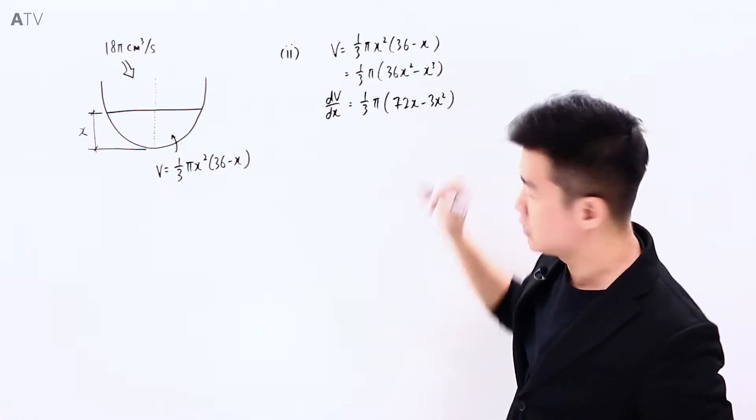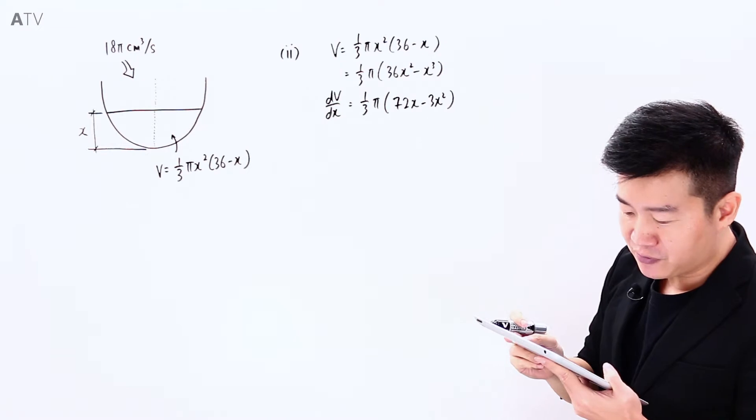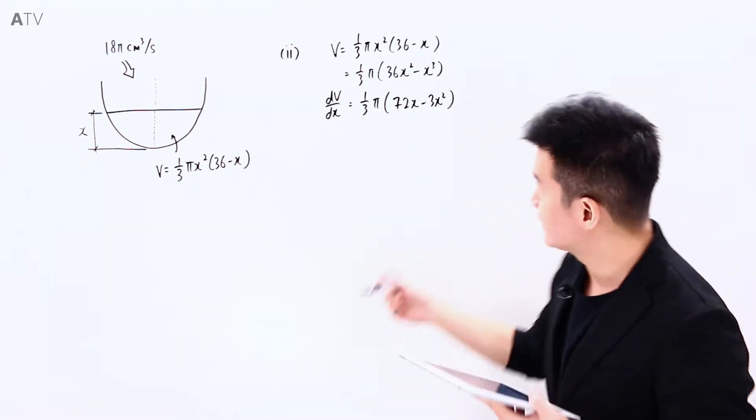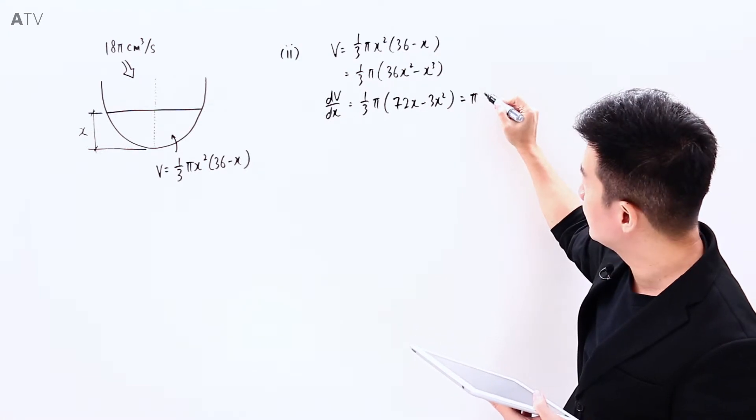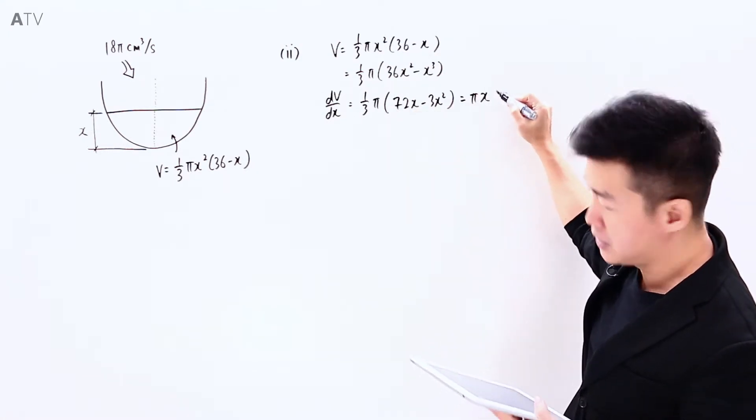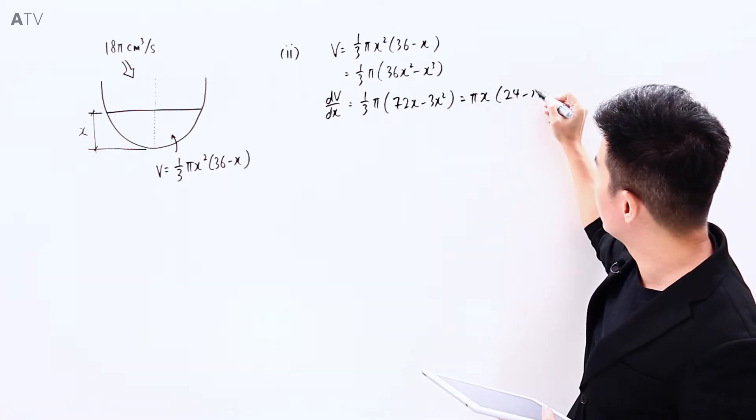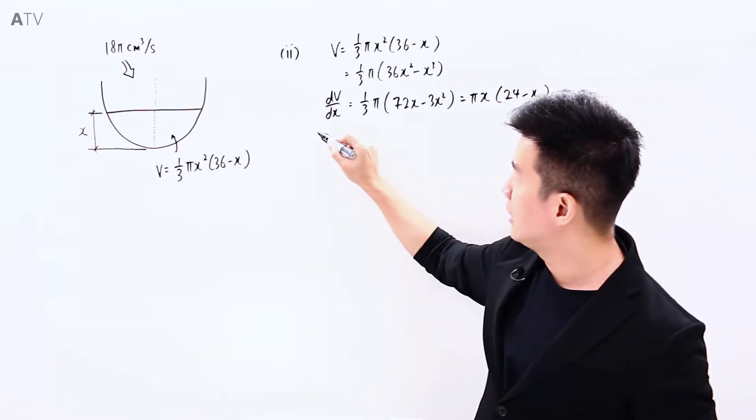Which I can also factorize out 3 that will give me πx(24-x). And we are trying to look at the rate of change of x, dx/dt, when x is equal to 9.